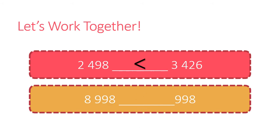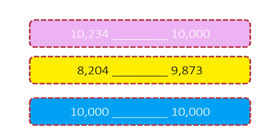Very good — less than. How about if we compare 8,998 to 998? Good, it's greater than. Let's try to compare the following. If we compare 10,234 to 10,000, what would be our relation symbol? Greater than. 8,204 compared to 9,873 — less than.